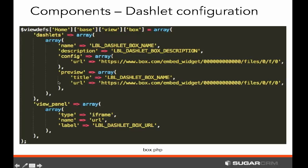Let's look at the various pieces of the dashlet configuration. There are two real major parts, plus the piece at the top defining the dashlet properties. At the very top, we have this view_defs array, which is a global array that defines all the dashlets in the system. The definition clearly says this dashlet is part of the Home module, indicated by the first piece of the array, then base — meaning it's part of the base rendering client — and then it's a view pertaining to the Box dashlet. In the case of an application-level dashlet, the Home portion would not be there and it would begin right with base.